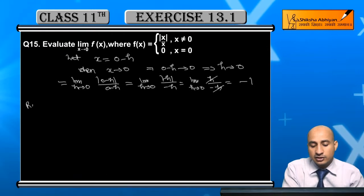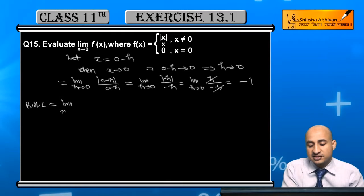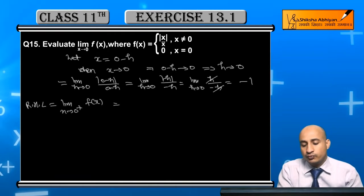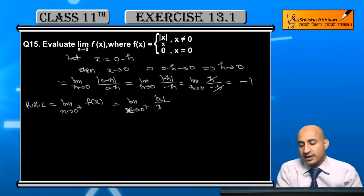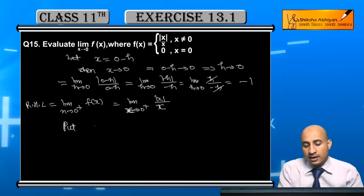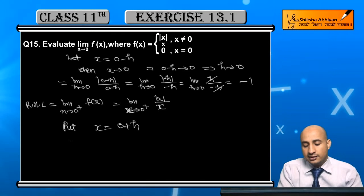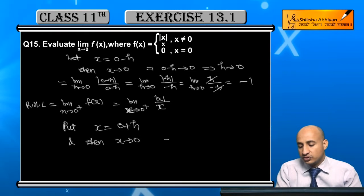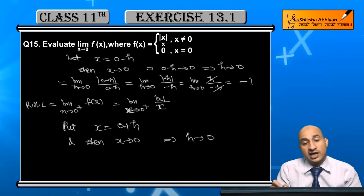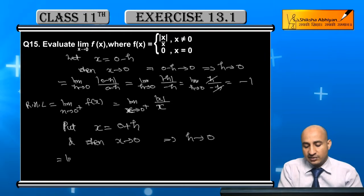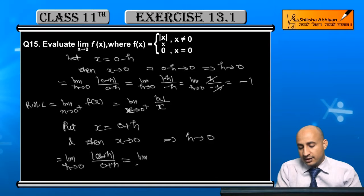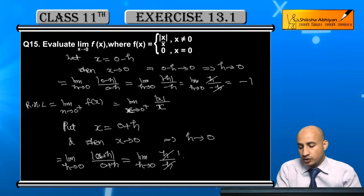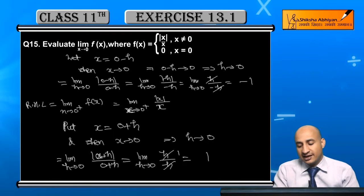Similarly, the right-hand limit: limit x tends to 0 plus of f(x), which is modulus of x upon x. Let x equal to 0 plus h. When x tends to 0 plus, this implies h also tends to 0. This becomes limit h tends to 0 of modulus of (0 plus h) upon (0 plus h), which is modulus of h upon h. Since modulus of h equals h for positive h, this gives h upon h, which equals 1. So the right-hand limit is 1.